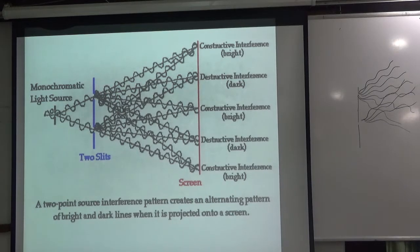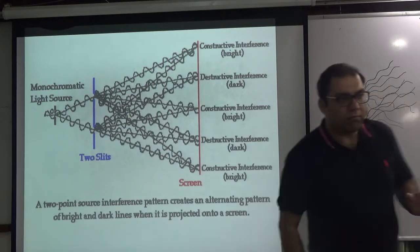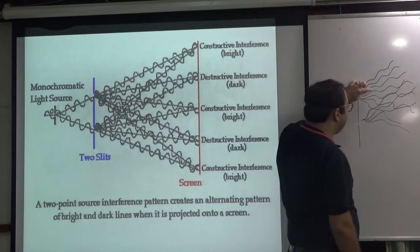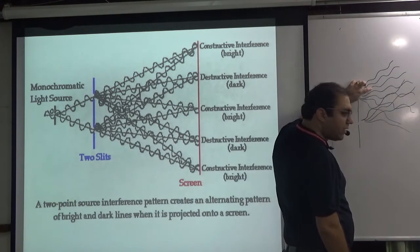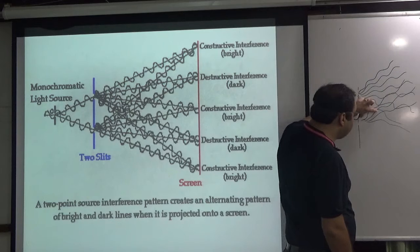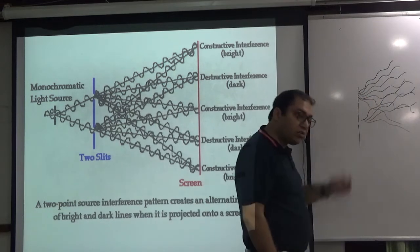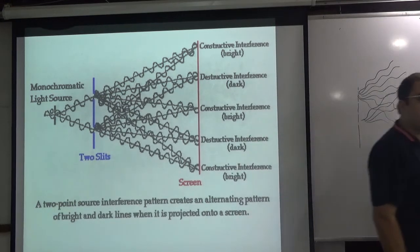Coherent sources. So, in the definition, it is mentioned: from two coherent sources. Coherent means identical — meaning, if a disturbance generates here and a crest generates here, then it will generate exactly a crest at the other source too. That's what identical means.